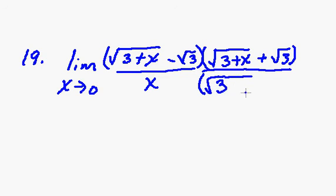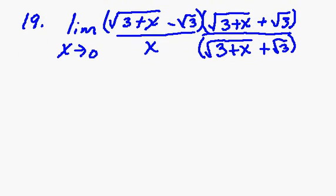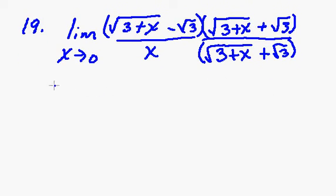So I'm going to write the square root of 3 plus x plus the square root of 3. Now what I'm going to do here is multiply the tops. And we end up with the limit as x approaches 0. And now when I do this, I multiply this stuff out. You know, the square root of 3 plus x times the square root of 3 plus x, right? Is this going to end up being 3 plus x?